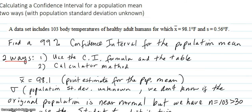The problem that we're given is going to be with the population standard deviation unknown. So here's the problem: a data set includes 103 body temperatures of healthy adult humans for which the sample mean is 98.1 degrees Fahrenheit, and the standard deviation is 0.56 degrees.